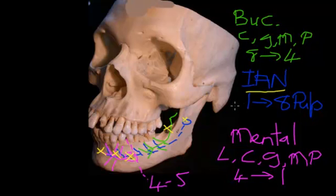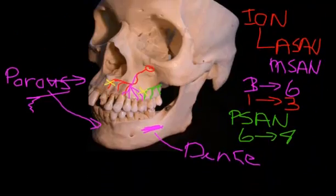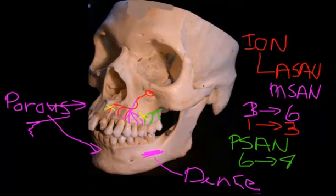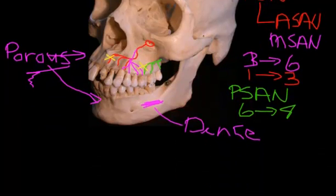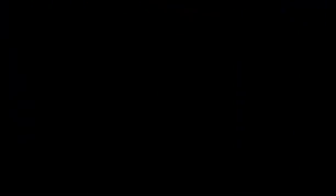So that's the key buccal surface nerve supply for the lower jaw, and we've looked at the upper jaw. Now let's move on and look at the lingual surface — where the key nerves run from that perspective.